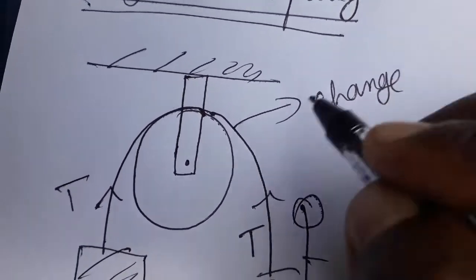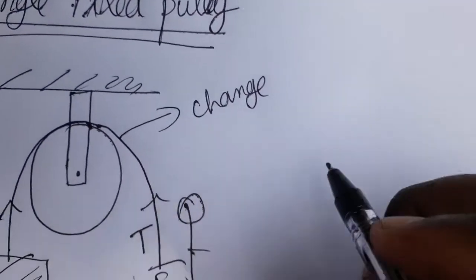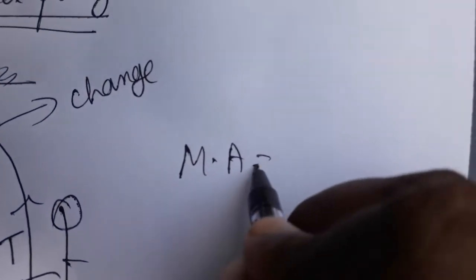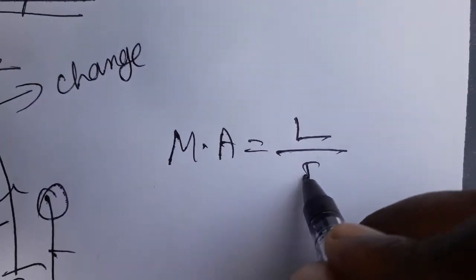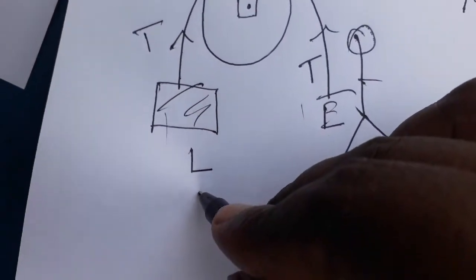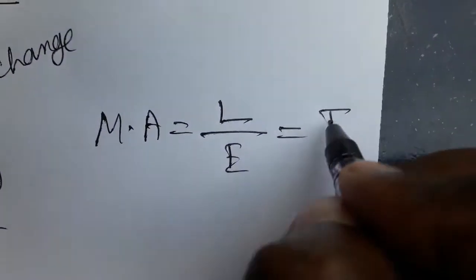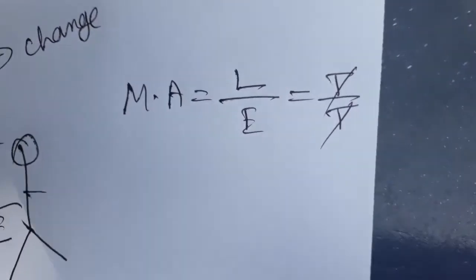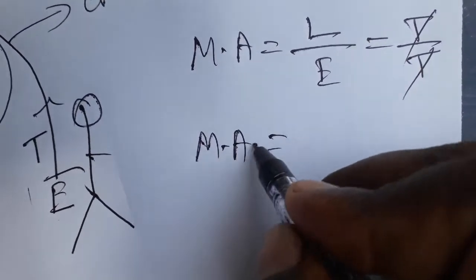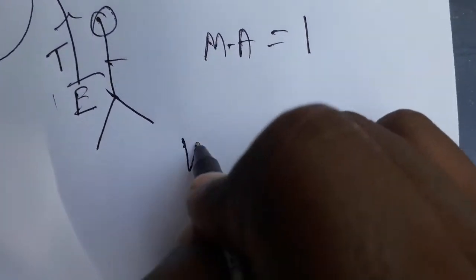Mechanical advantage is load by effort. So load is tension T, effort is tension T, so T by T. Both is tension, so we are getting the mechanical advantage of single pulley will be one. Now for velocity ratio...